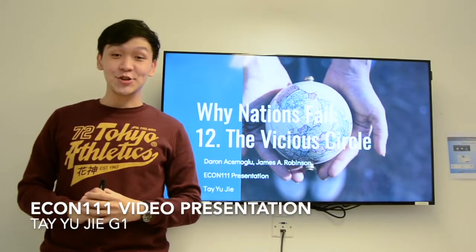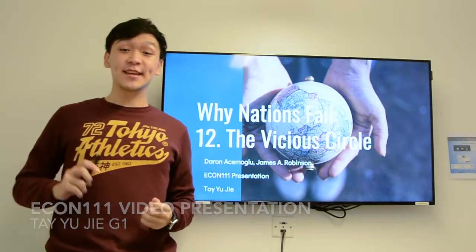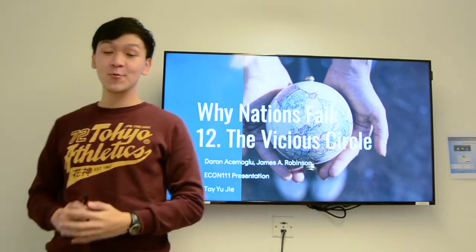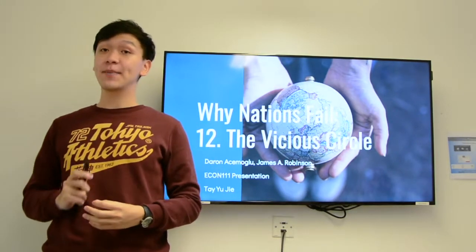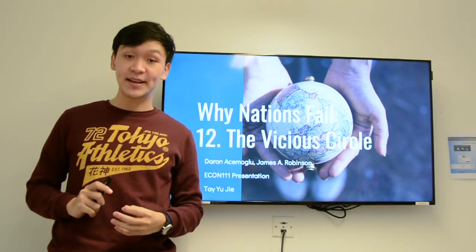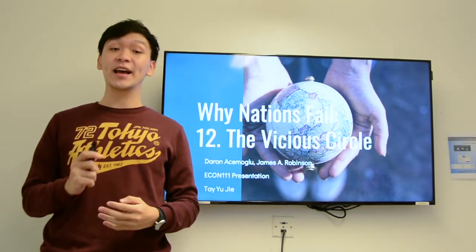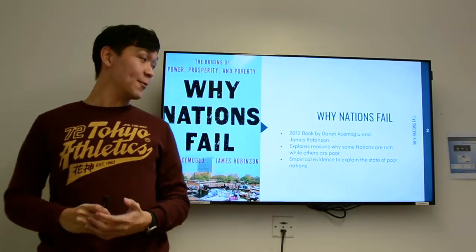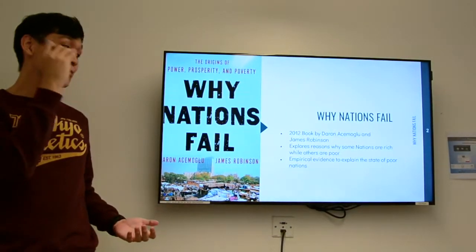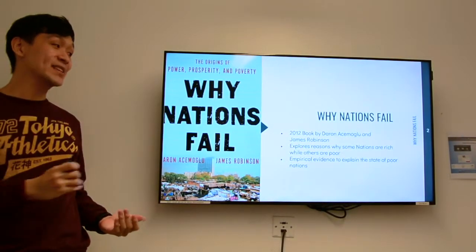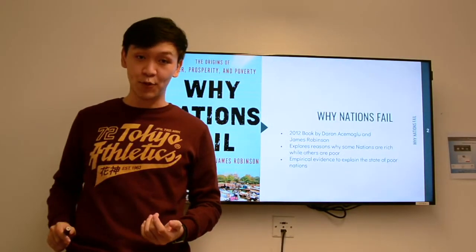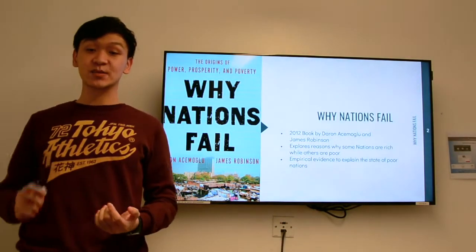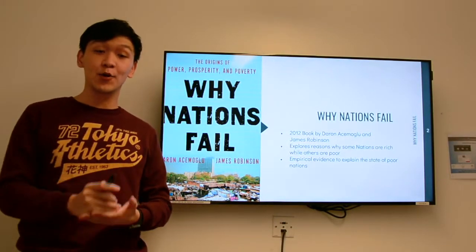Good morning class, my name is Yu Jie and today I will be presenting on Chapter 12 of the world-renowned book Why Nations Fail by Darren Acemoglu and James Robinson. This book is a famous example that explores reasons why some nations are rich while others are poor. They use empirical evidence to explain the state of poor nations.